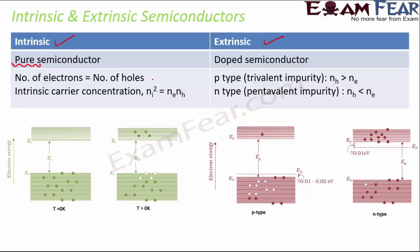Electrons are negatively charged particles which carry current, and holes are regions created when an electron moves away — so holes are positively charged. In an intrinsic semiconductor, the number of electrons equals the number of holes. The intrinsic carrier concentration is given by n_i = √(n_e × n_h), where n_e is the number of electrons and n_h is the number of holes.